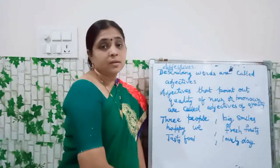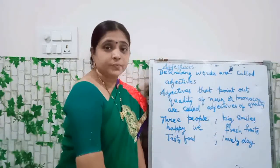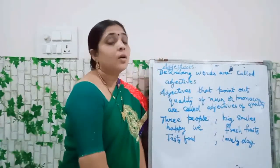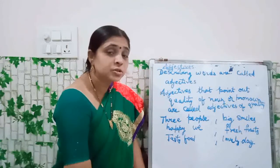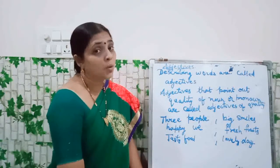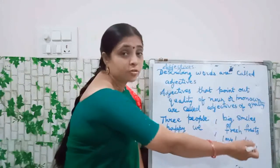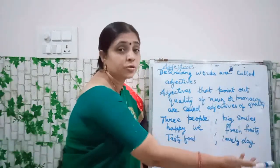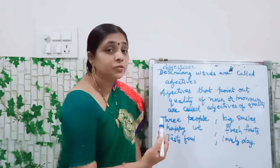And here — 'big smiles.' How are the smiles? Big smiles. Smile is noun and big is adjective — quality of the noun. Like 'fresh fruits' — how are the fruits? Fresh. How are the fruits? Fresh. 'Lovely day' — how is the day? Lovely day. This adjective describes about the noun. What kind of a day? Lovely day. What kind of fruits? Fresh fruits. 'Tasty food' — how is that food? Tasty.